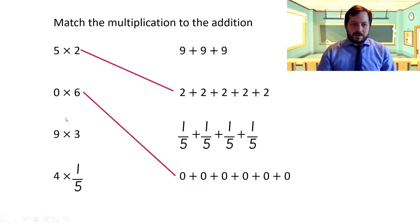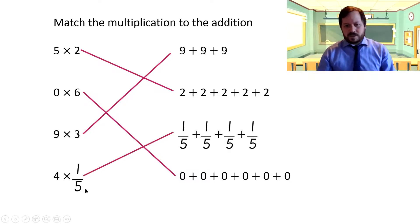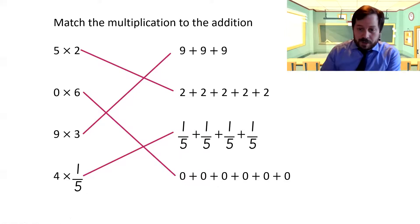Nine times three either means three nines or nine threes. And four times one-fifth means four one-fifths or one-fifth times four. That's harder to do. So let's do four one-fifths, which is this one here. And actually, this shows us exactly what we're doing. Where's the rule? Not as hard as you think. Let's have a look.